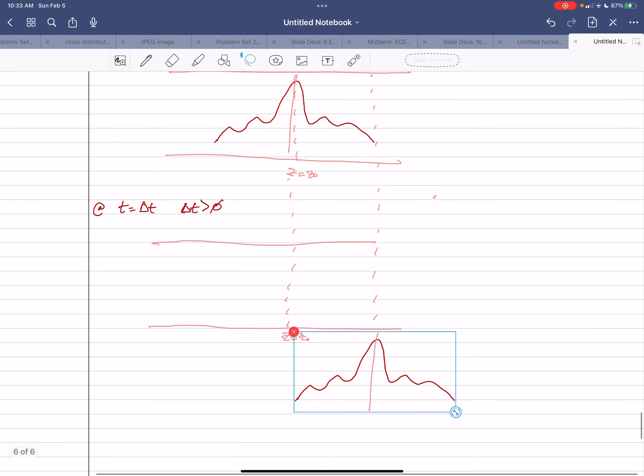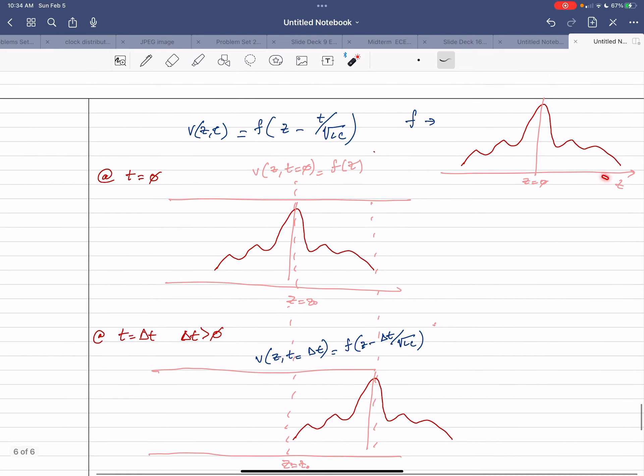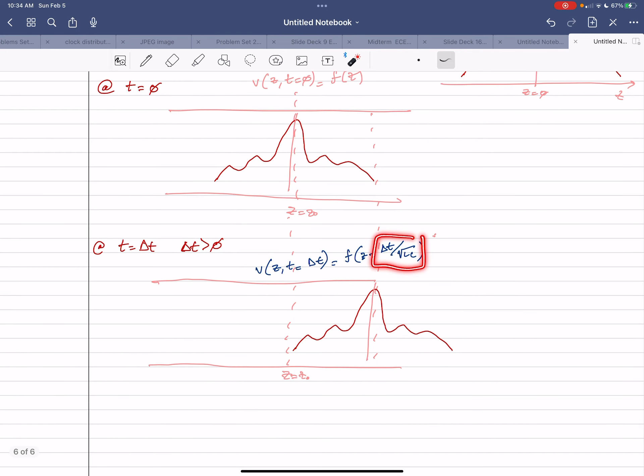So what's happened at this delta t, we note that this guy's shifted over, so that this v at z at t equal to delta t is the same function, but at a time earlier. So notice I'm subtracting this thing. So this is a positive value, I'm subtracting it from z. So if I look at this point here, I'm going to be now looking at a point here, z minus delta t over LC. So that's going to be somewhere here. So the waveform has moved.